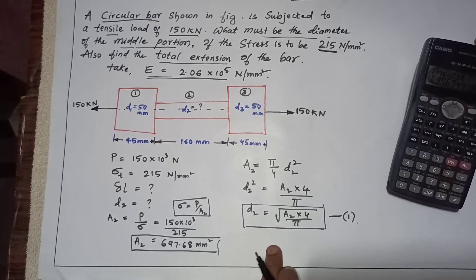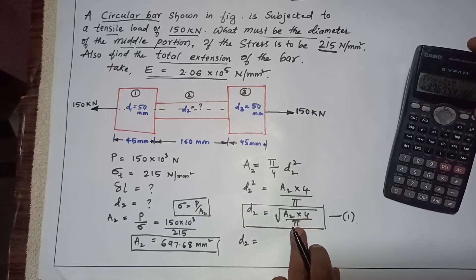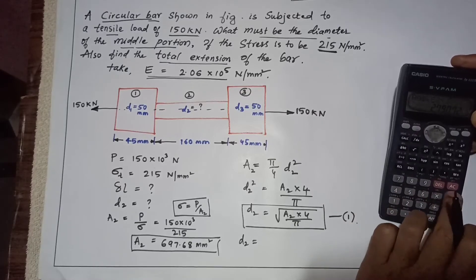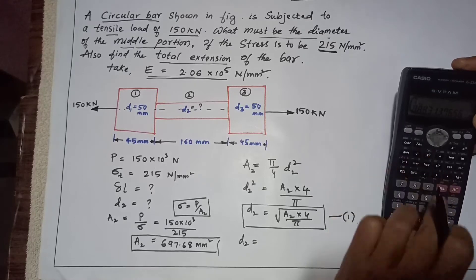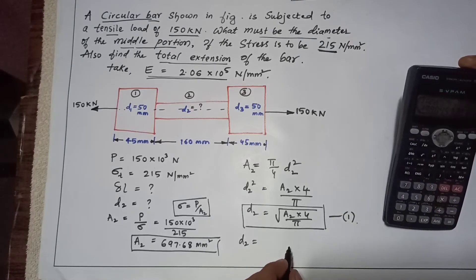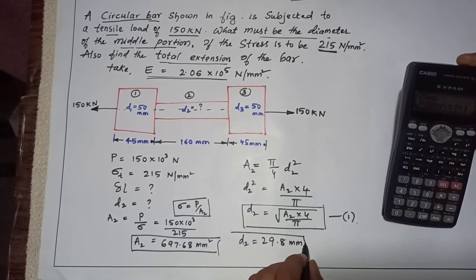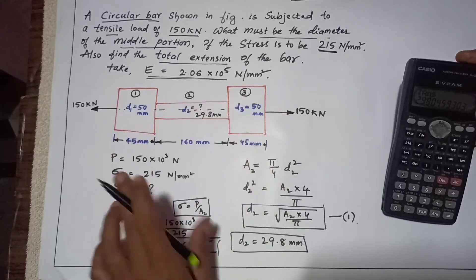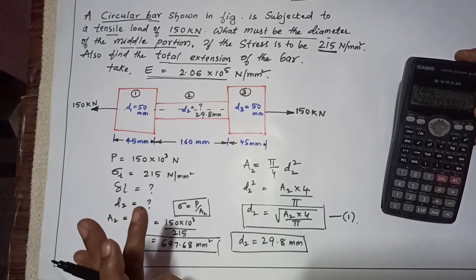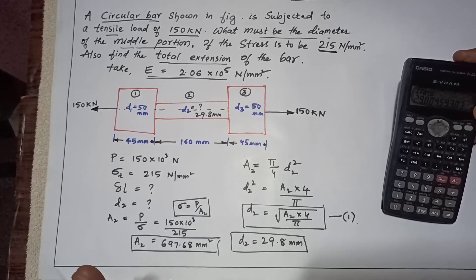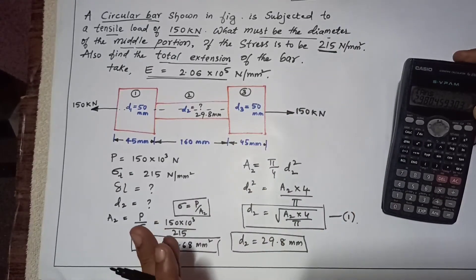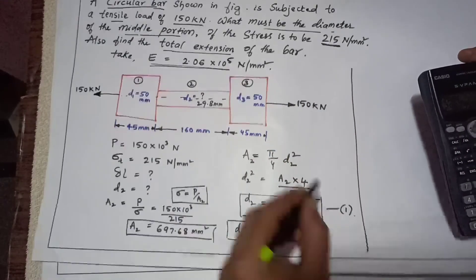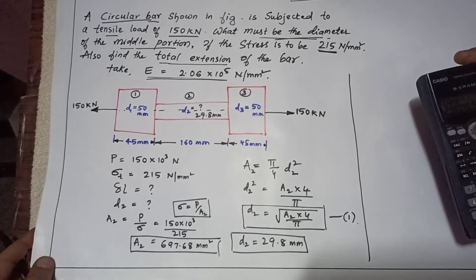Now substituting directly: D2 = √(A2 × 4 / π) = √(697.68 × 4 / π). This gives D2 = 29.8 millimetres — that is the diameter for the middle portion. All units are in millimetres here, including stress, Young's modulus, and dimensions. Checking units is the primary step — you must ensure all values are consistently in metres, centimetres, or millimetres, and convert if necessary. So we have finished calculating the area and diameter for the middle portion.